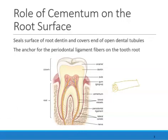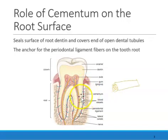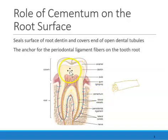Remember the hydrodynamic theory — if the tubules are open, the fluid here can move, and when the fluid moves, we can sense pain. So cementum covers all the dentinal tubules. Also, all around the root we have the periodontal ligament fibers, which on one end are anchored to the cementum, and on the other end are attached to the bone. So another reason why cementum is important is because cementum helps the tooth stay anchored down in the socket.